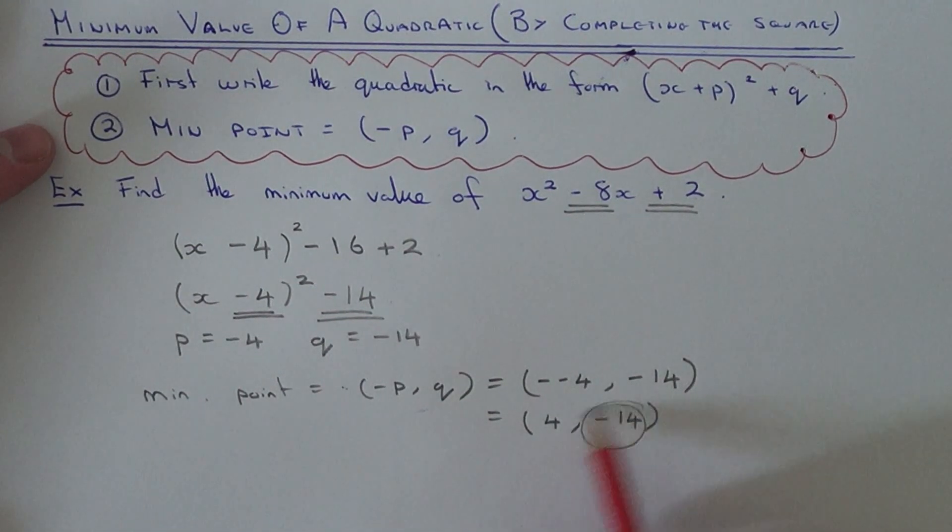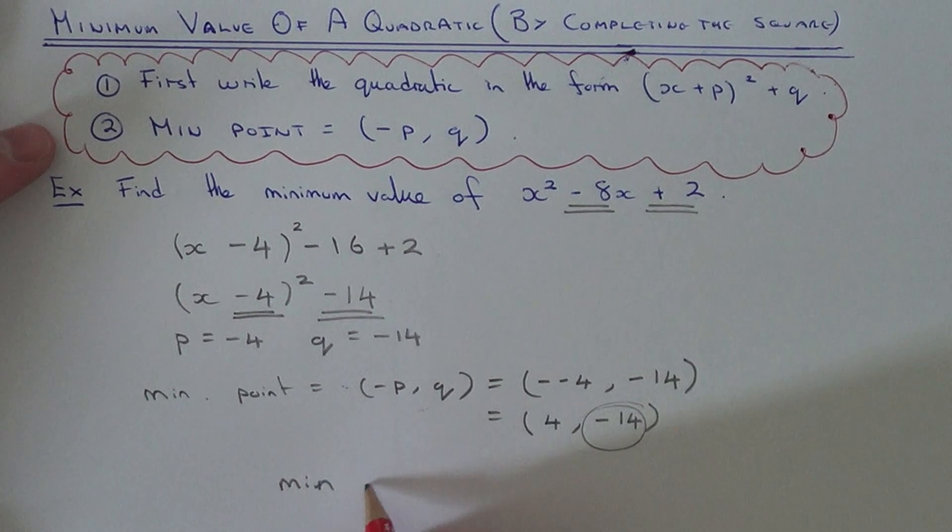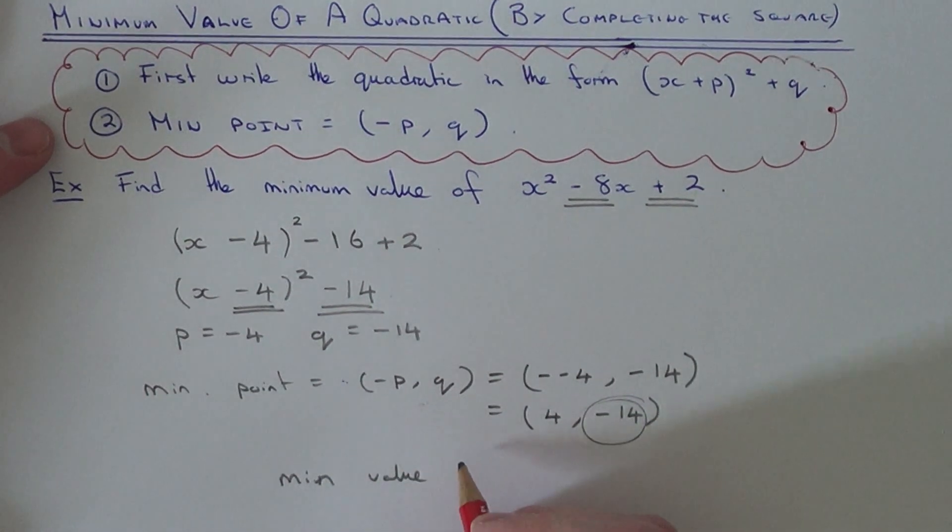And the exact minimum value, if we just ask for the minimum value it will just be the q value here. So the minimum value of the quadratic will be in fact minus 14.